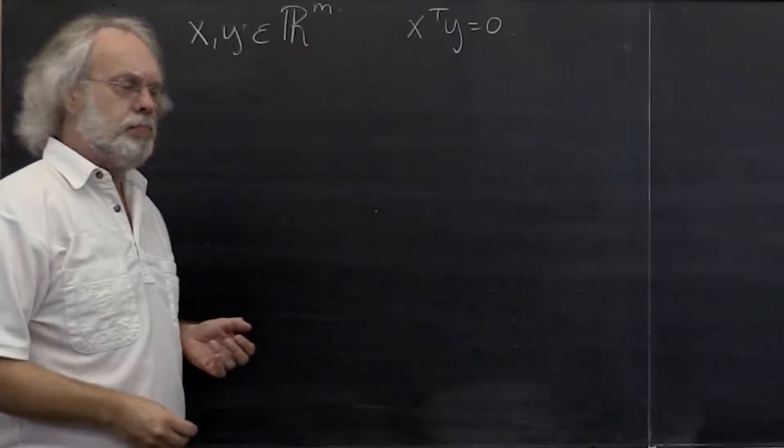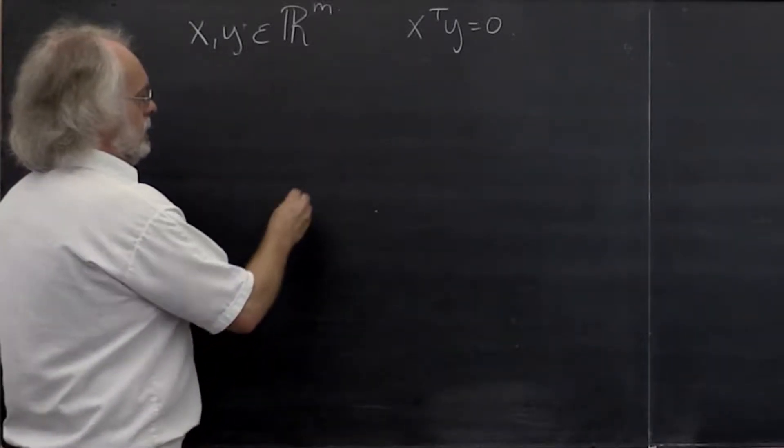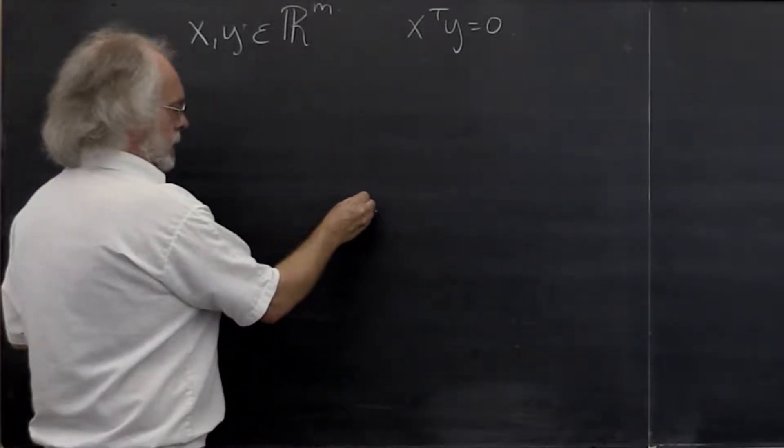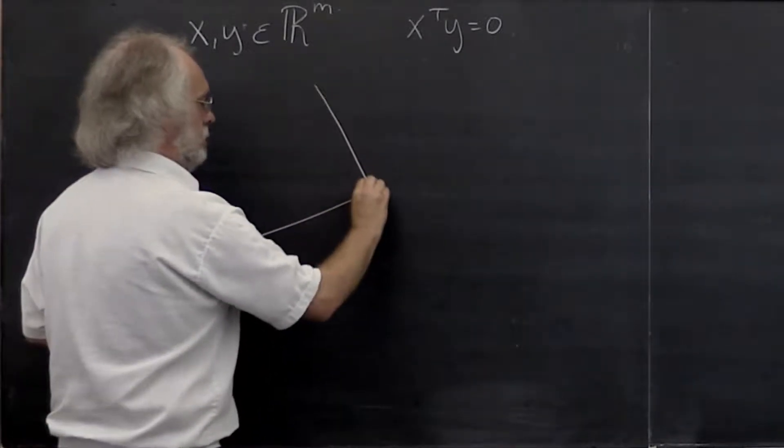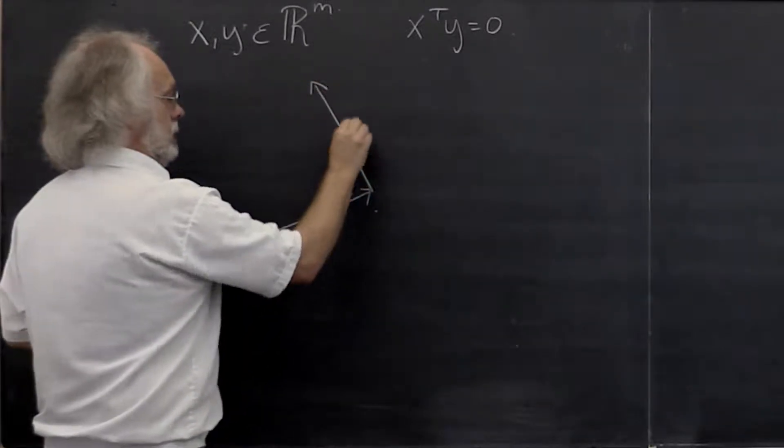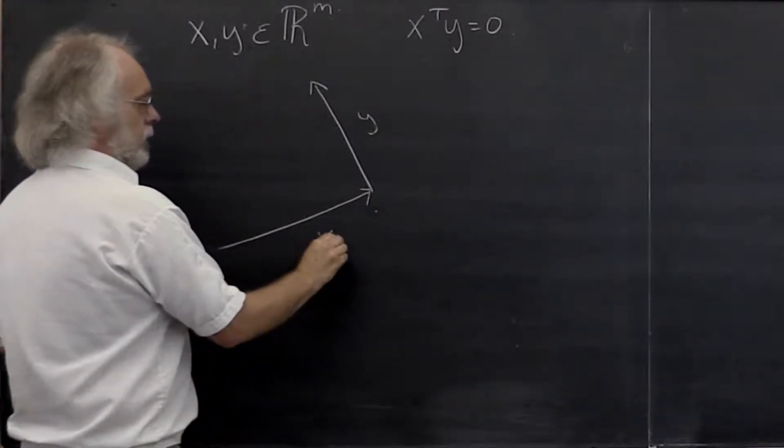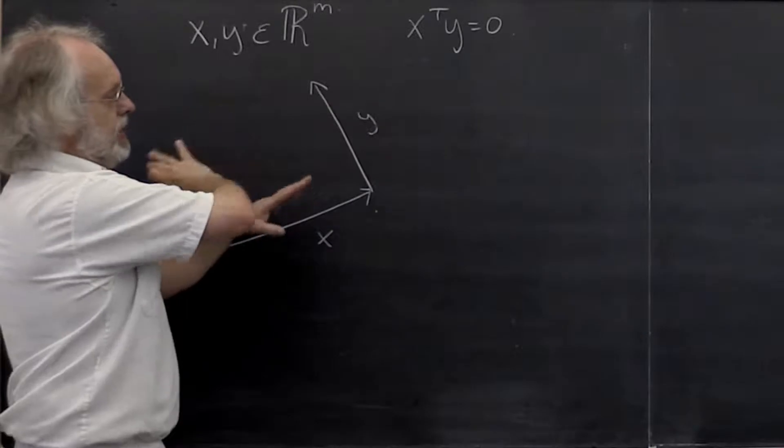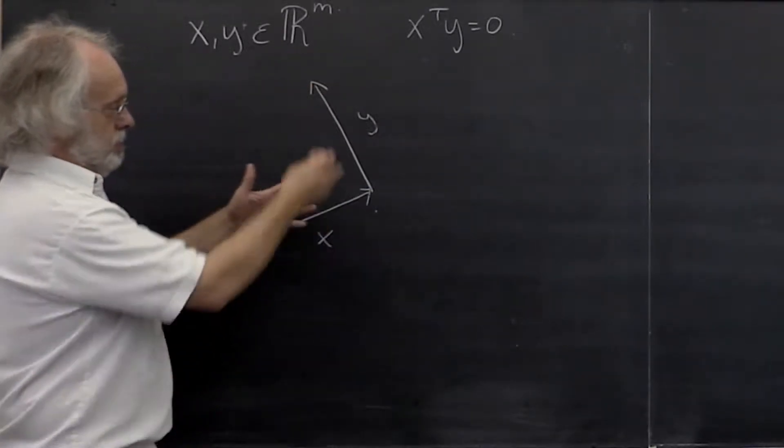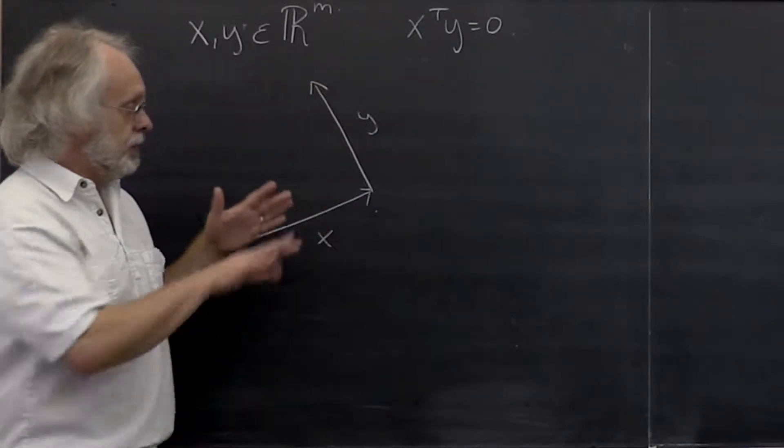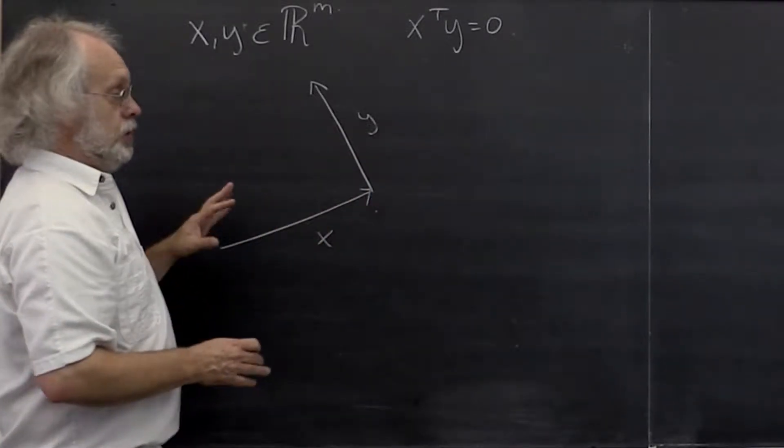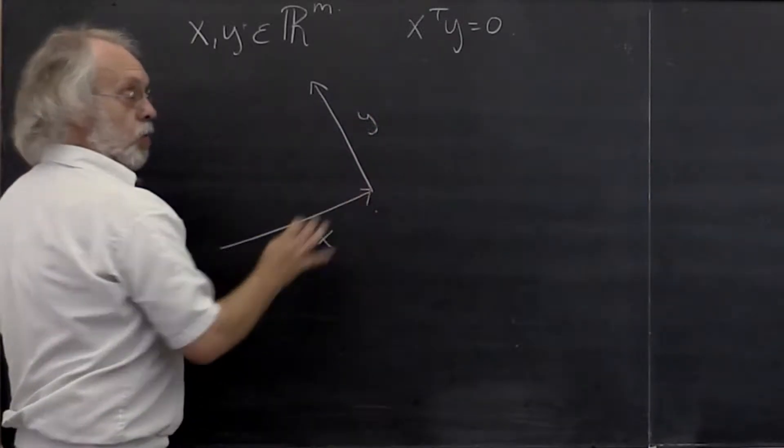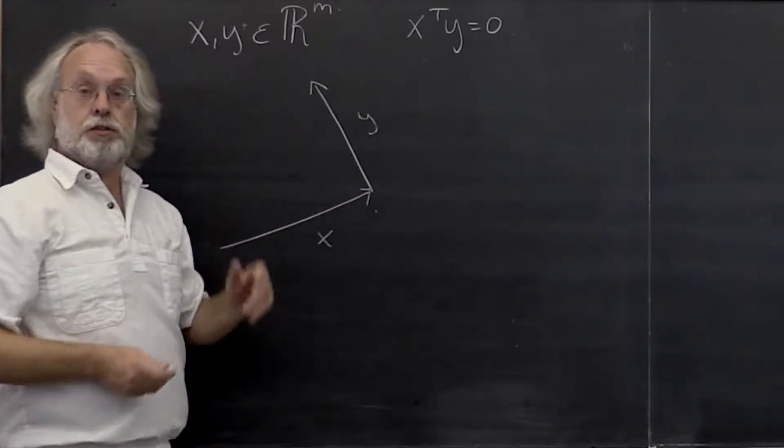Where does that come from? Well, let's have a look here. We have a vector x and a vector y. Then notice that the space spanned by those two vectors, as long as they're non-zero vectors and they don't point in the same direction, is a two-dimensional space. So we can think of the chalkboard as being that two-dimensional space.